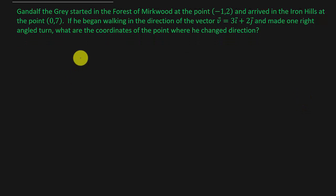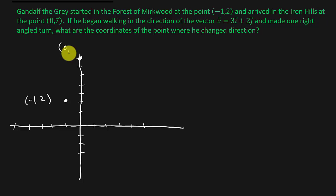Let's plot the points and see if we can figure this thing out. So he started at (-1, 2), that's right here. And arrived at the Iron Hills at the point (0, 7). So that's going to be the point up here.